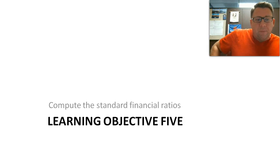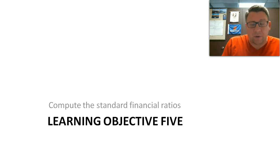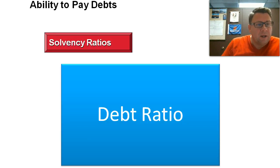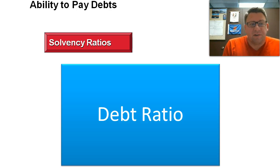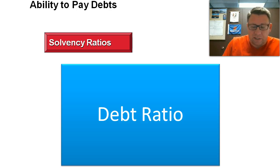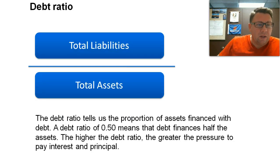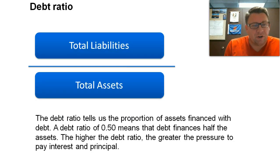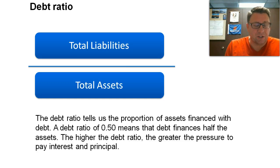Hi, welcome to this podcast related to the debt ratio. The debt ratio is one of the solvency ratios — it measures our ability to pay our debts. The formula for the debt ratio is total liabilities divided by total assets.